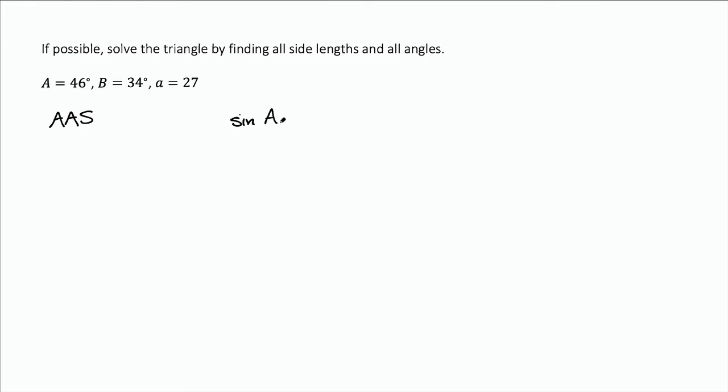We can do the form where the angles are on top: sine of A over a equals sine of B over b equals sine of C over c. Or we can use the form that has the sides on top.